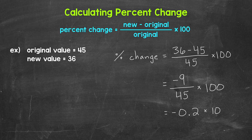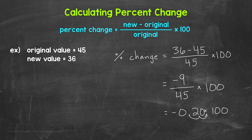Now we need to divide. Negative 9 divided by 45 gives us negative 0.2. Now we have negative 0.2 times 100 — taking that decimal and multiplying by 100 to convert it to a percent. A quick way to multiply by 100 is to move the decimal twice to the right, and we fill that place with a zero. That gives us negative 20%.